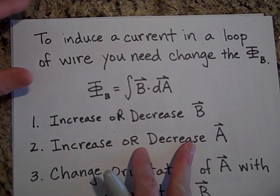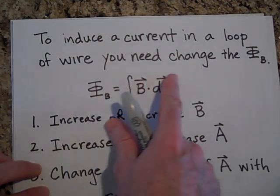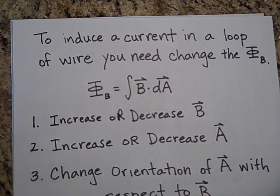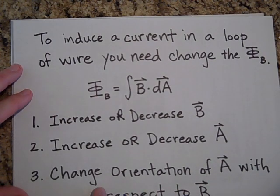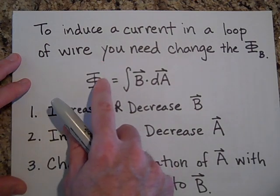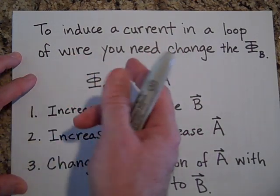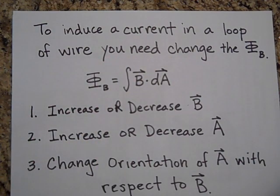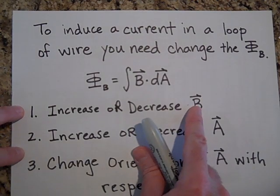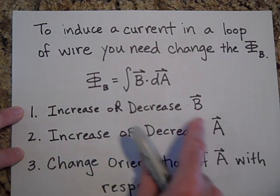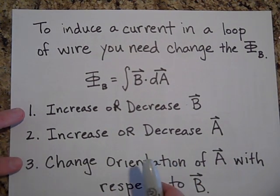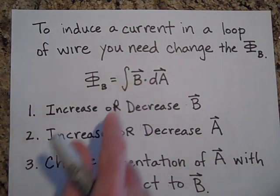So, to induce a current in a hoop of wire, you need to change the flux. That's what you need to do. You have to change the flux. And this is our equation for flux. So, to summarize all this and put it in just some simple terms here, if you want to induce a current in a loop, or induce some voltage in a loop, you'll need to change the flux. And here are the ways you can change the flux. You can either increase or decrease B. You can increase or decrease A. Or you can change the orientation at which A and B are at with respect to one another. You can take advantage of that dot product.